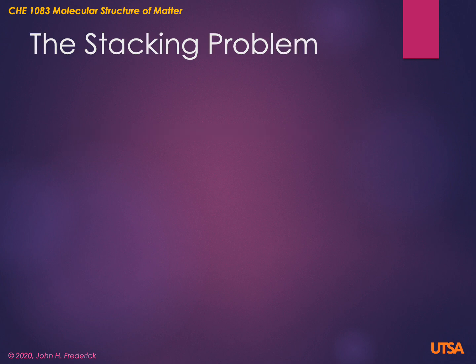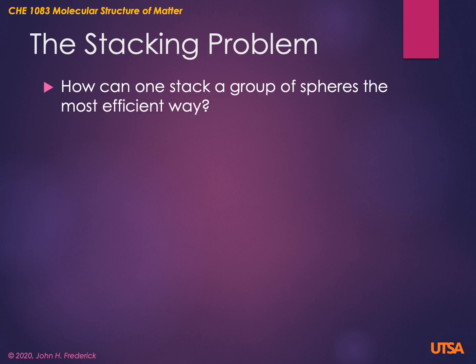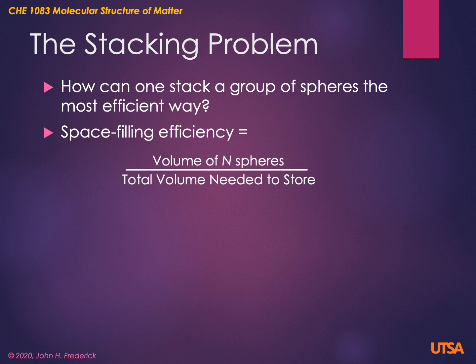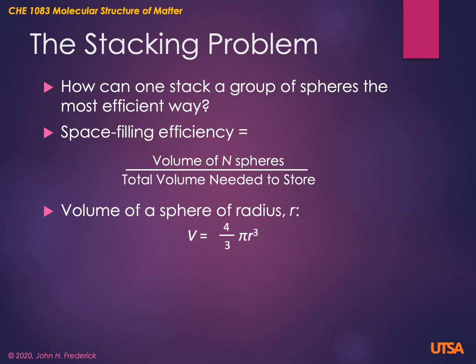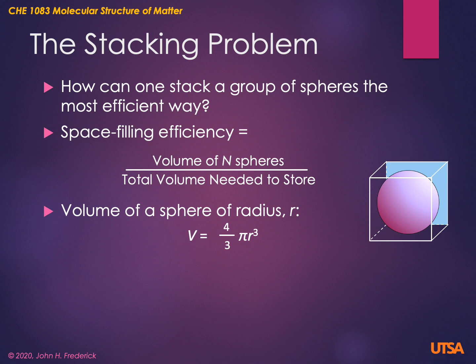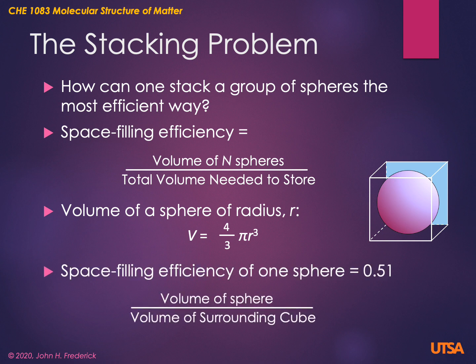Let's first describe the stacking problem. One might ask, how can one stack a group of spheres in the most efficient way — that is, that take up the least amount of space? We're going to define something called the space-filling efficiency, which is basically the volume of some number of spheres, n spheres, divided by the total volume that is needed to store them. The volume of a sphere of radius r is given by four-thirds pi r cubed. If we were to put this sphere into a cubic box, the box has sides of length 2r, we would find that the space-filling efficiency of one sphere would be 0.51. This comes from taking the volume of the sphere, dividing by the volume of the surrounding cube, which gives you a ratio of pi divided by six.